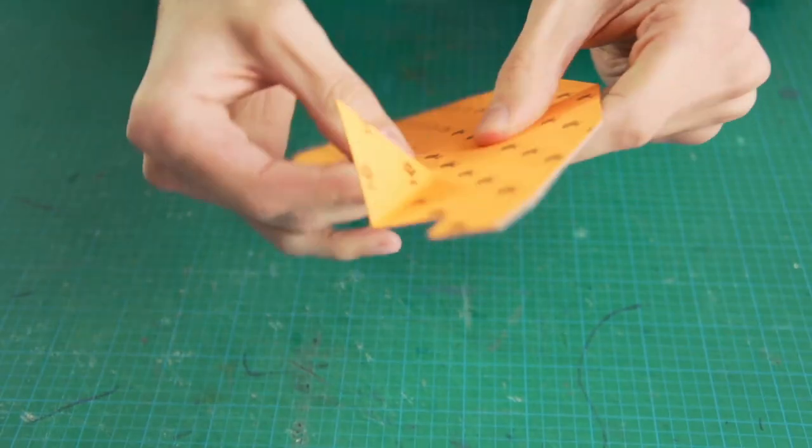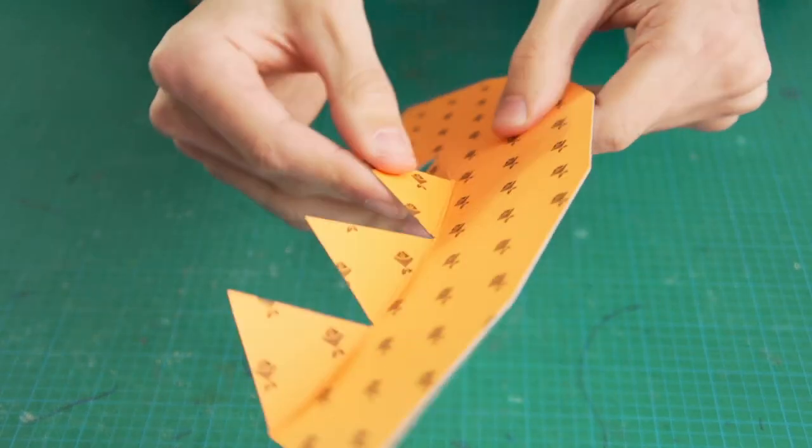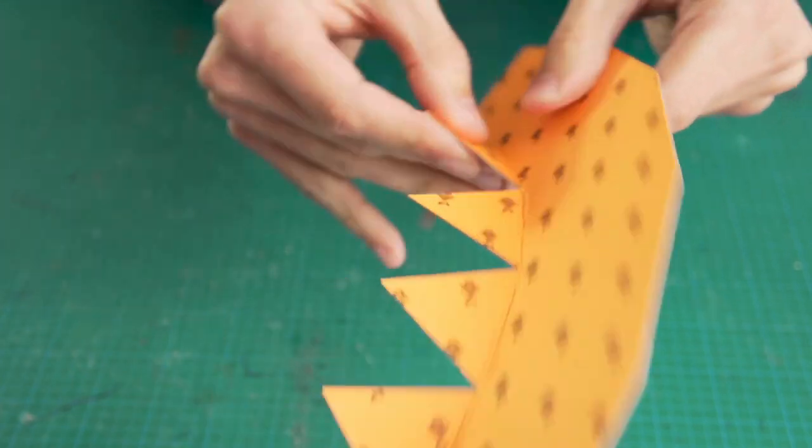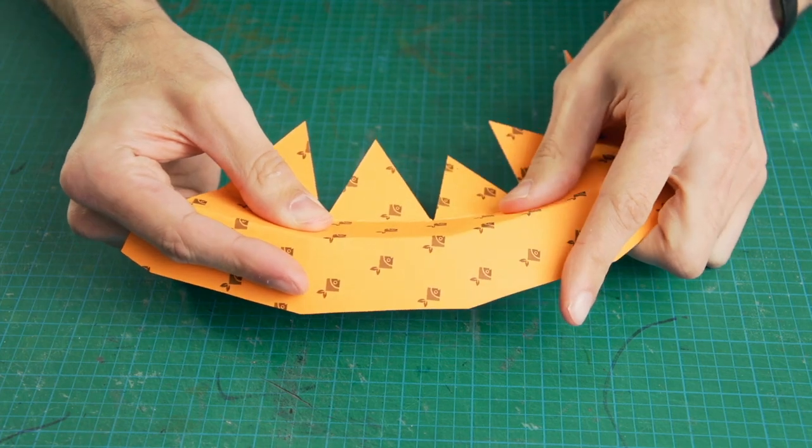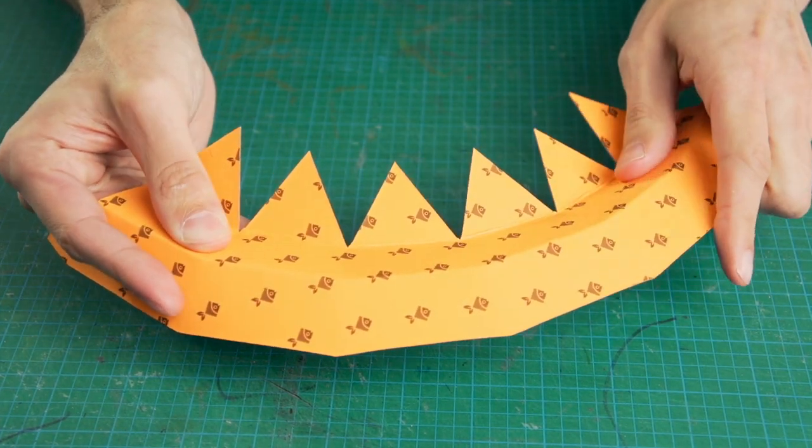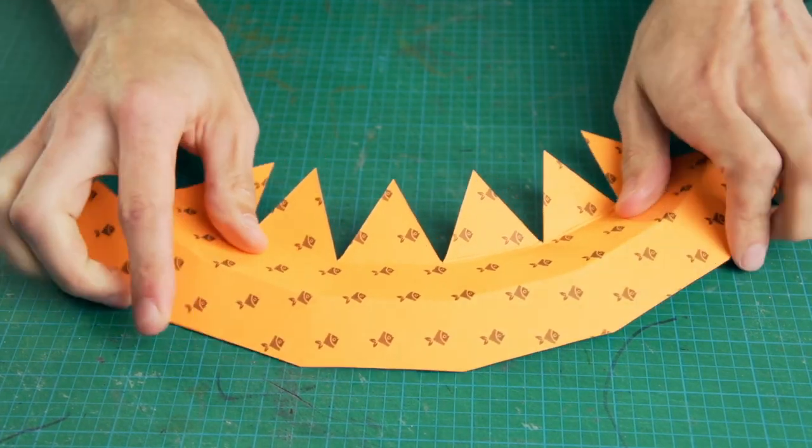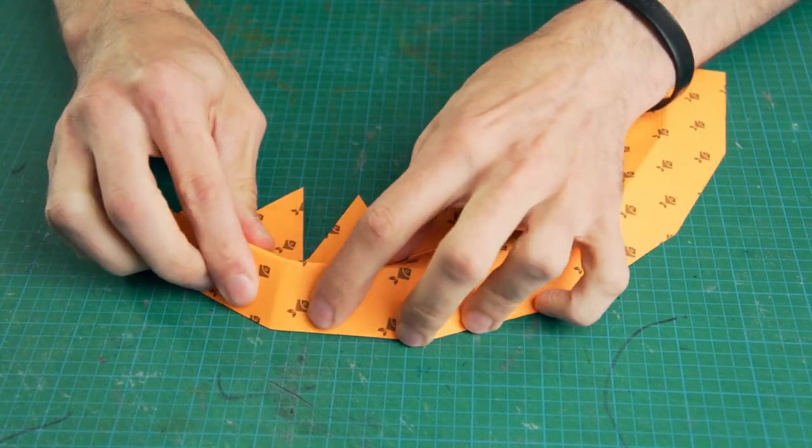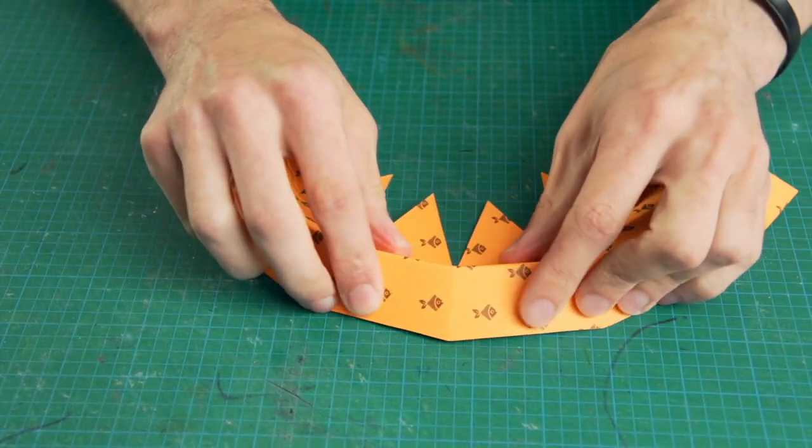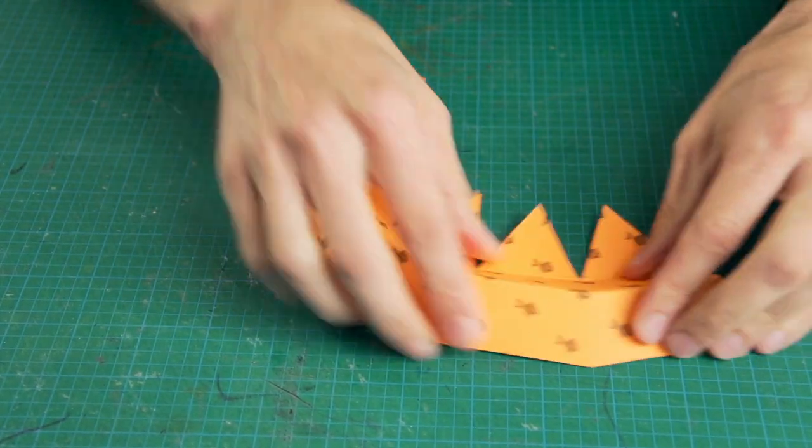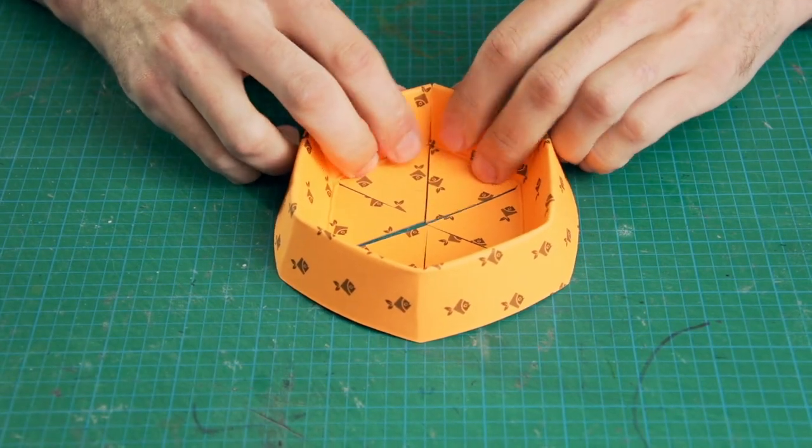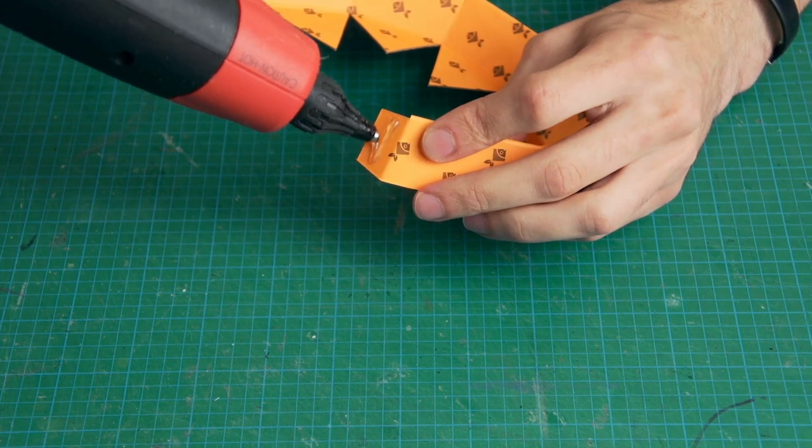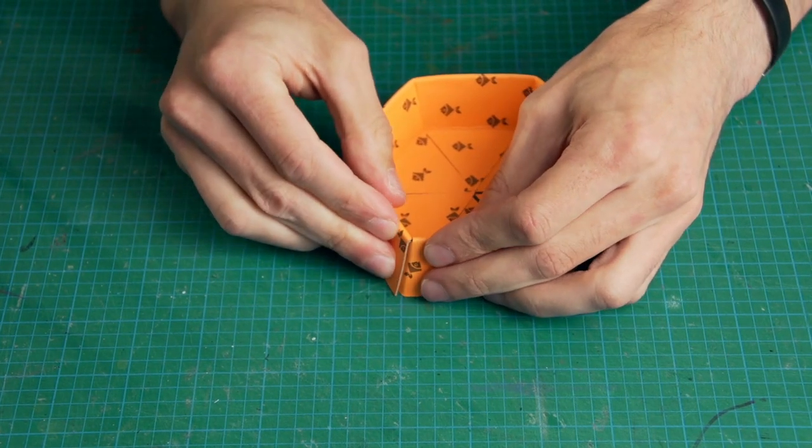Pre-bend all the triangular tabs. Working your way from one end, bend the long piece into a peaked hexagonal ring. Apply some hot glue to the end tab and then hold it in place until it's set.